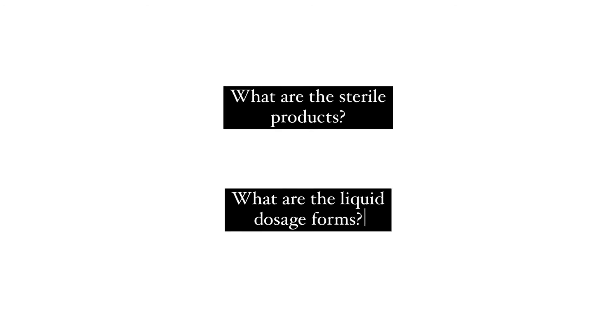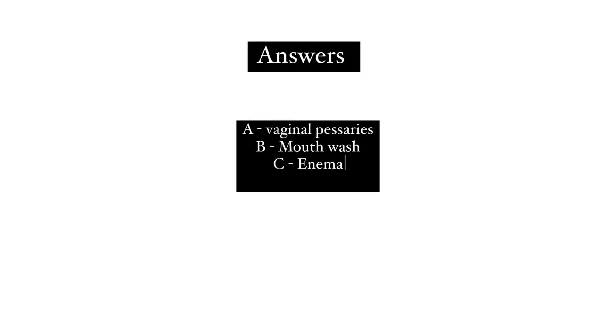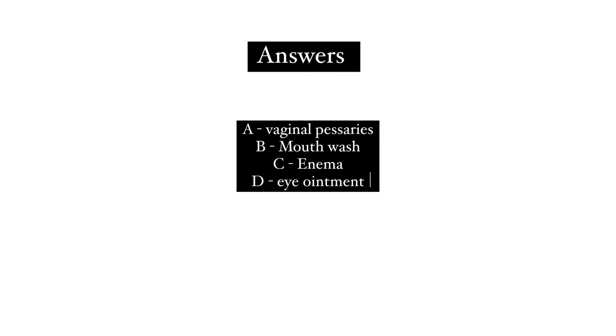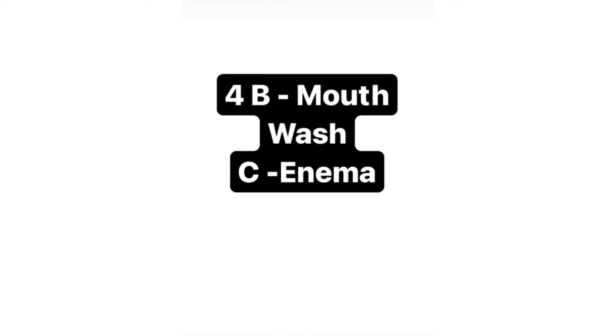The answers are: A is vaginal pessaries, B is mouthwash, C is enema, and D is eye ointment. The routes of administration are: A vaginal, B topical, C rectal, D ocular. The sterile product is eye ointment. The liquid dosage forms are mouthwash and enema.